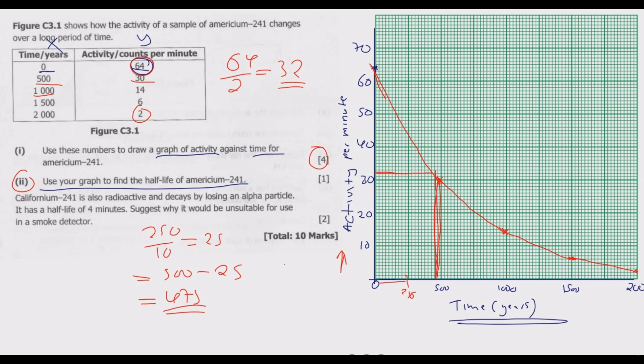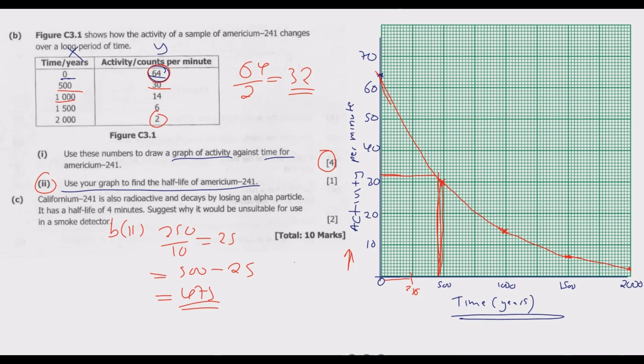Now the next question, part (c): Californium-241 is also radioactive and decays by losing an alpha particle. It has a half-life of 4 minutes. Suggest why it would be unsuitable for use in smoke detectors. What you notice is the half-life is 4 minutes. After 4 minutes, half of it is gone. Within a short period of time, it will decay to almost zero.